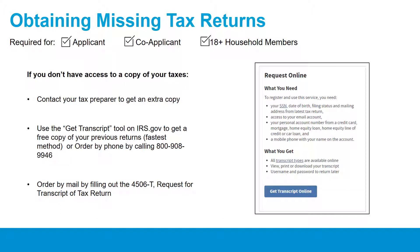Obtaining Missing Tax Returns. If you don't have a paper copy of your tax returns, you must obtain them before your application submission consultation. If you used a tax preparer, contact them and they may be able to provide you with additional copies. Or, if you used an online tax preparation service, log into your account to access saved copies. Anyone can also contact the IRS to retrieve copies of their filed taxes, either online or over the phone — you can also request transcripts by mail, but this may take more time. Habitat Chicago cannot complete your application processing without a copy of your taxes.